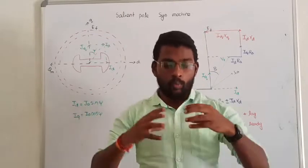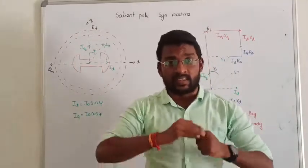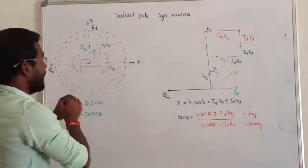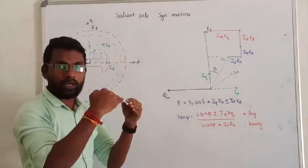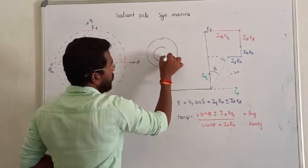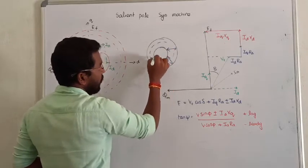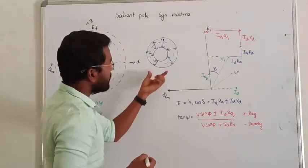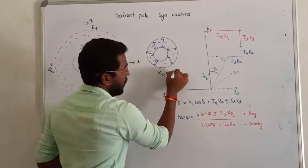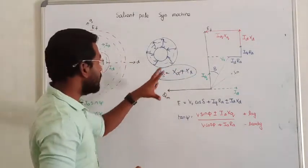Whereas in saliency, poles are projected outward. Now we are going to discuss about salient pole synchronous machine. We will see the difference between cylindrical type and salient pole type. In the cylindrical type, the air gap between the stator and the rotor is uniform. In case of cylindrical type, we know only one reactance — that is called synchronous reactance, which is the sum of armature reactance plus leakage reactance.